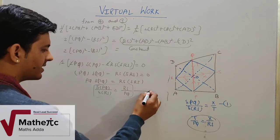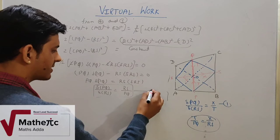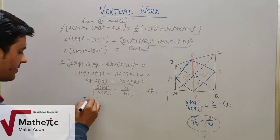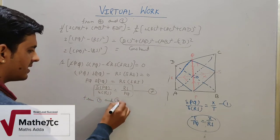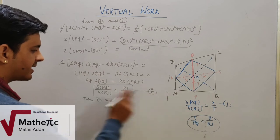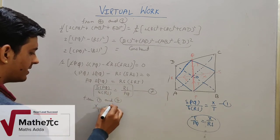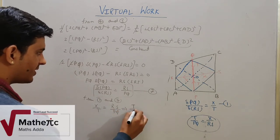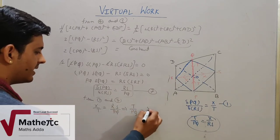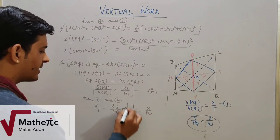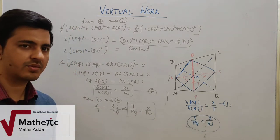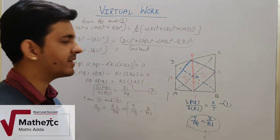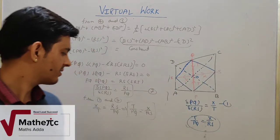From equation 1 we had δ(PQ)/δ(RS) = X/T, and from equation 7 we have δ(PQ)/δ(RS) = RS/PQ. Since both left-hand sides are equal, X/T = RS/PQ, which rearranges to T/PQ = X/RS. This is the result we needed to prove. The key extra property used here was the median theorem; otherwise we used virtual work throughout.